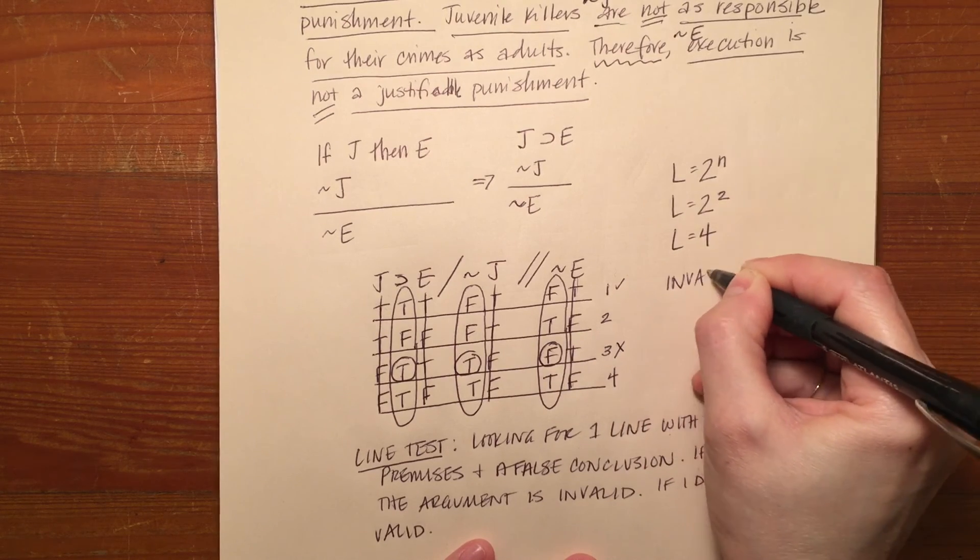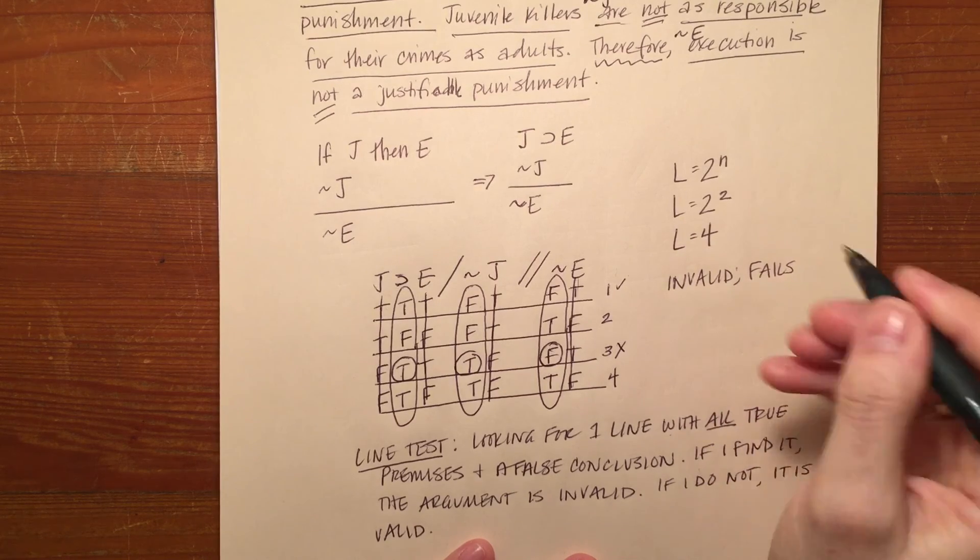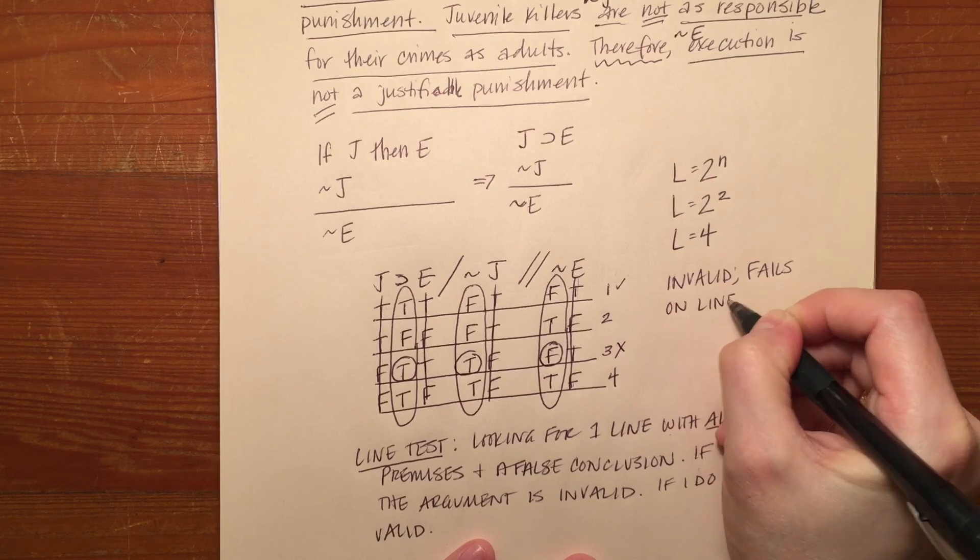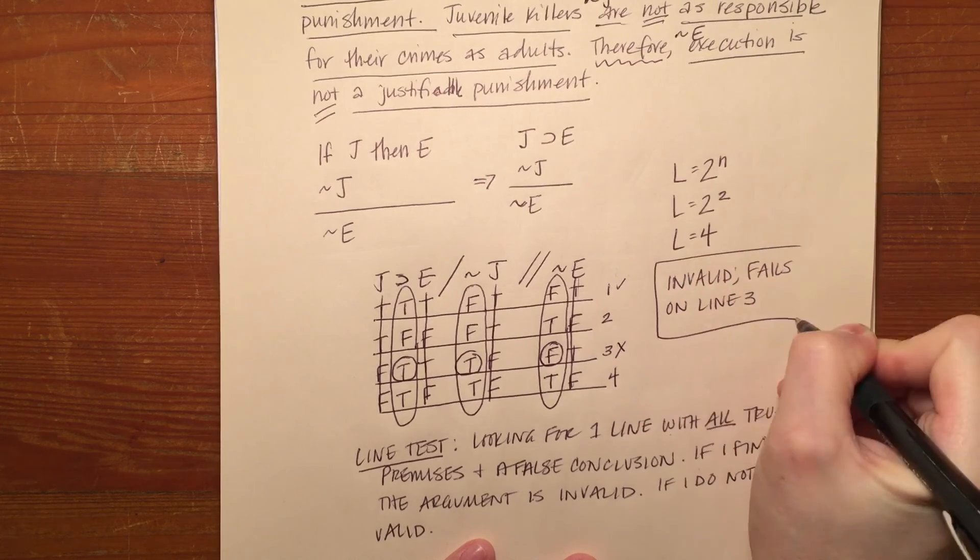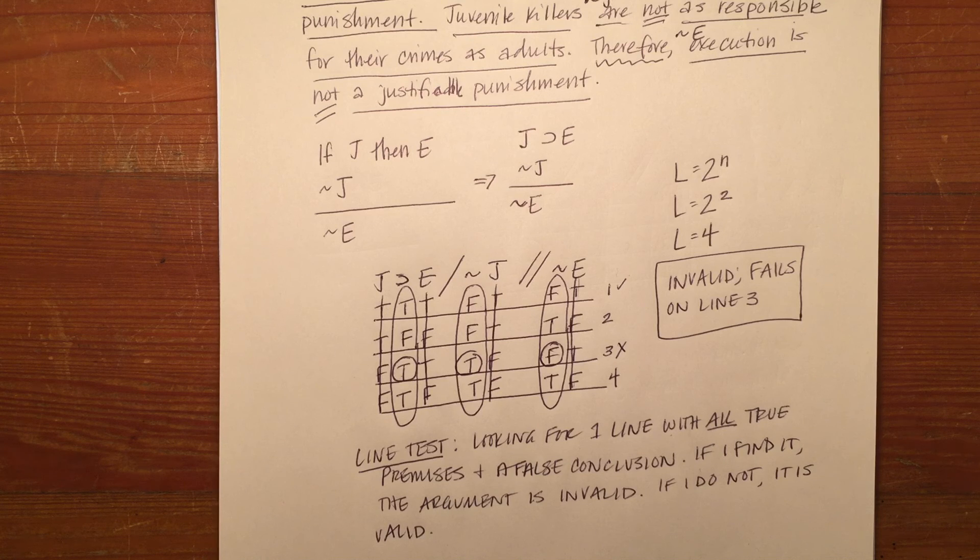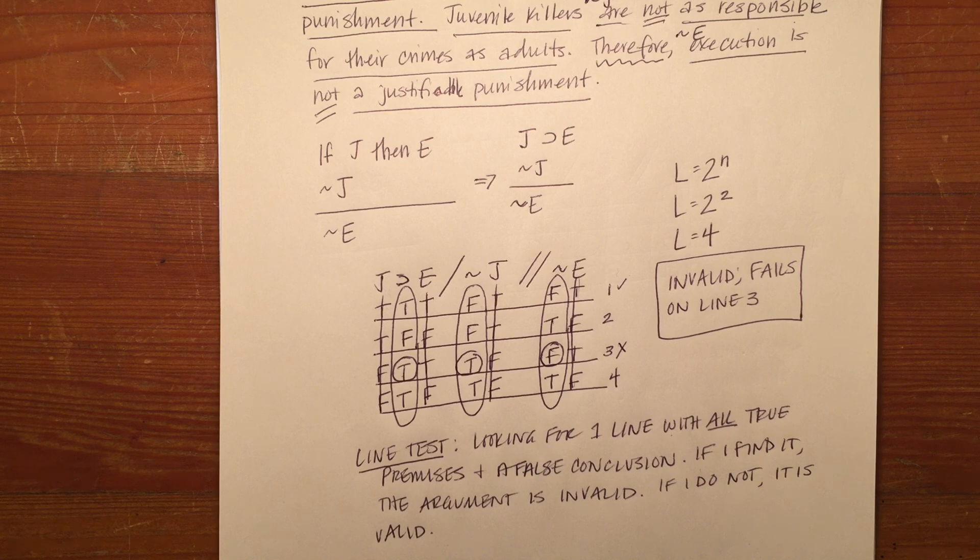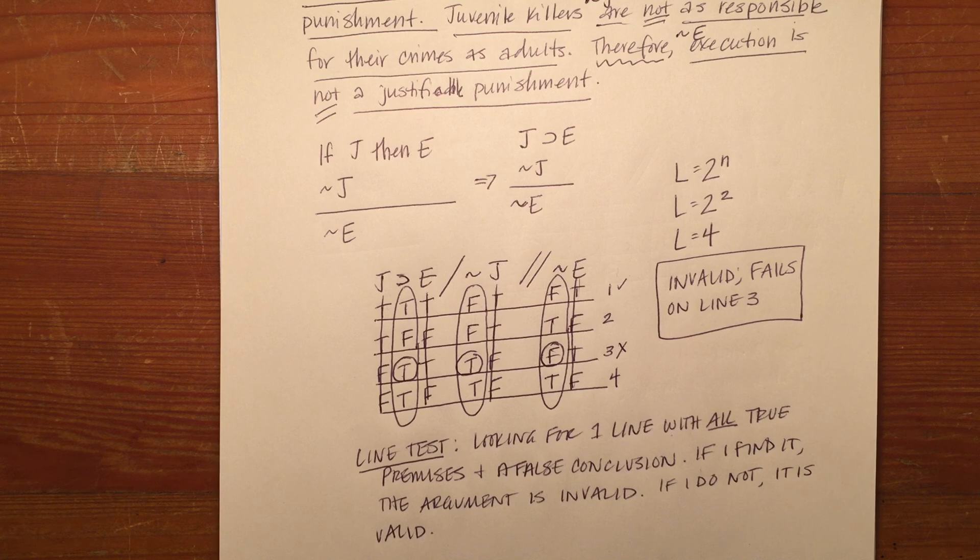So in my answer I would say invalid, fails the line test on line three, and that's an important part of your answer. Please don't leave that out on an examination or on any kind of homework because it's important that I know which line you're pointing to. So that is the first example as to how to do the translation and create a truth table to determine validity for an argument.